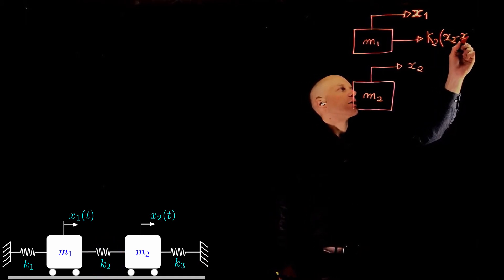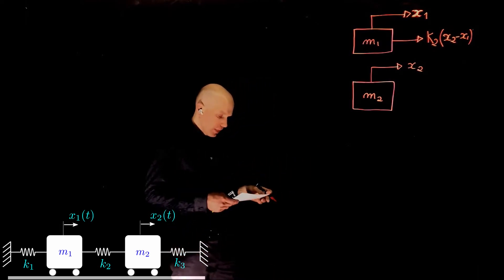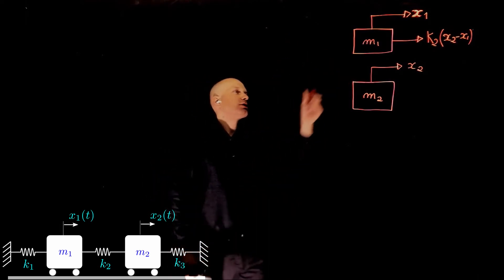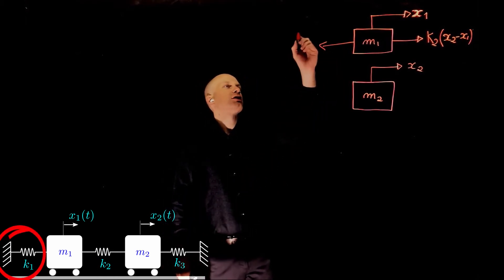We are again assuming that x2 is our input. This mass is connected to a fixed frame through another spring of stiffness k1.